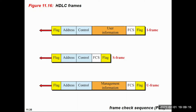After the flag, the next field is the address. The address contains the address of the secondary station, whether the frame is transmitted by the primary or secondary station. In a command, the station gives the address of the destination; in a response, it gives its own address. The address field consists of 8 bits, giving a capability of 256 different addresses.